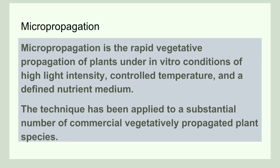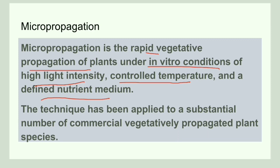Micropropagation is a technique in which a rapid number of vegetative plants can be produced under in vitro conditions — that is, under high light intensity, controlled temperature, and a defined nutrient medium. A plant is multiplied to produce many progenies using the modern plant tissue culture technique.